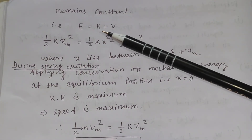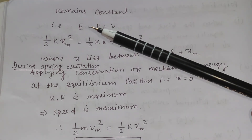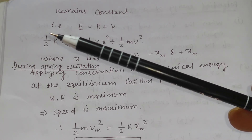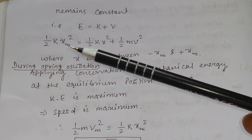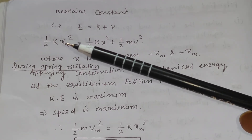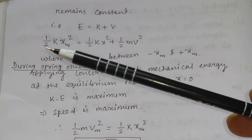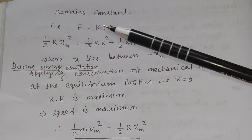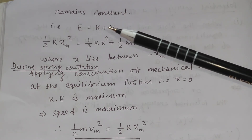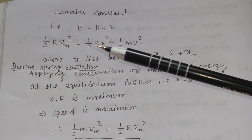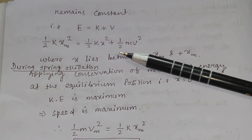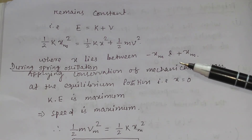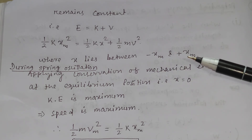The total energy E equals k plus V, and E = ½kxm². At maximum displacement, the total energy equals ½kxm², which equals the kinetic energy plus potential energy at any position x: ½kxm² = ½kx² + ½mv², where x lies between -xm and +xm, that is from maximum compression to maximum extension.